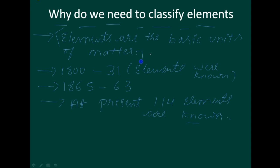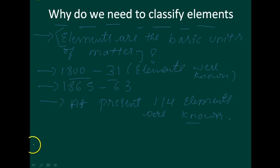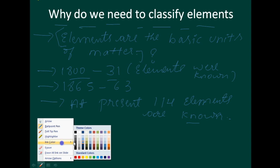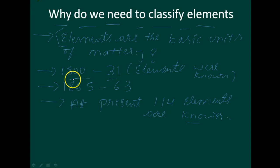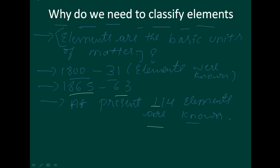So to summarize why we need to classify the elements: first, you have to understand what do you mean by element. During 1800, thirty-one elements were discovered. During 1865, sixty-three elements were discovered. At present, one hundred and fourteen elements are known, and man-made elements are also present. This is the first concept.